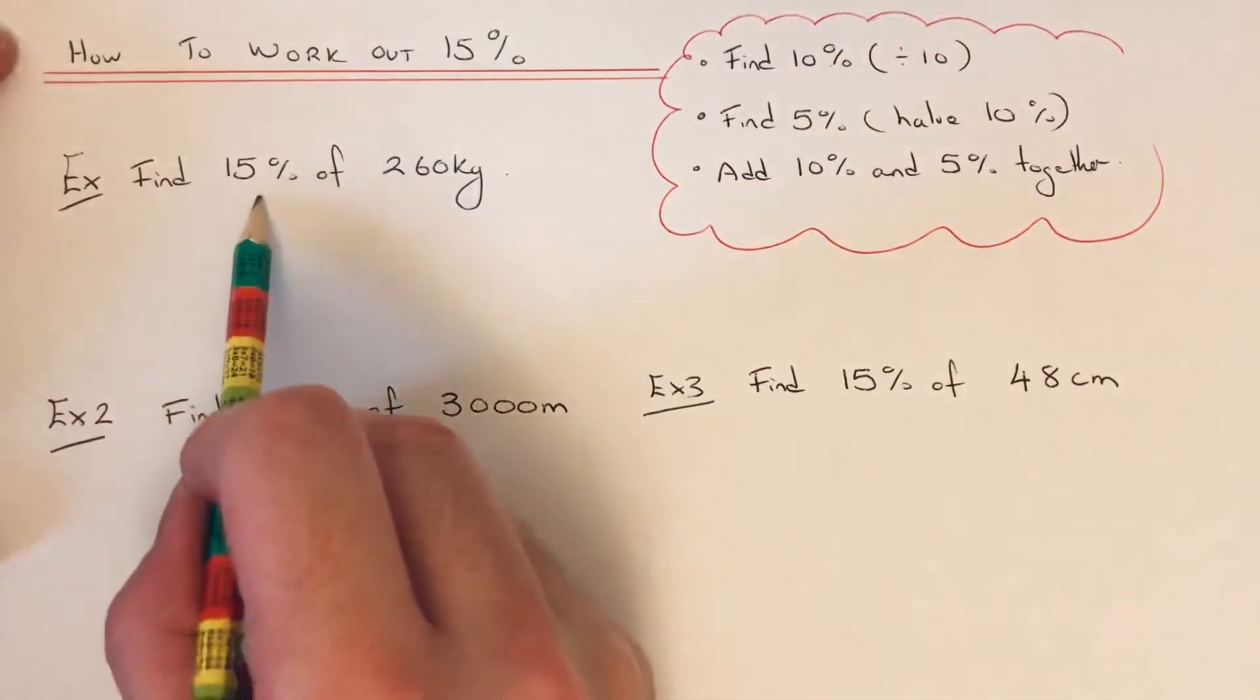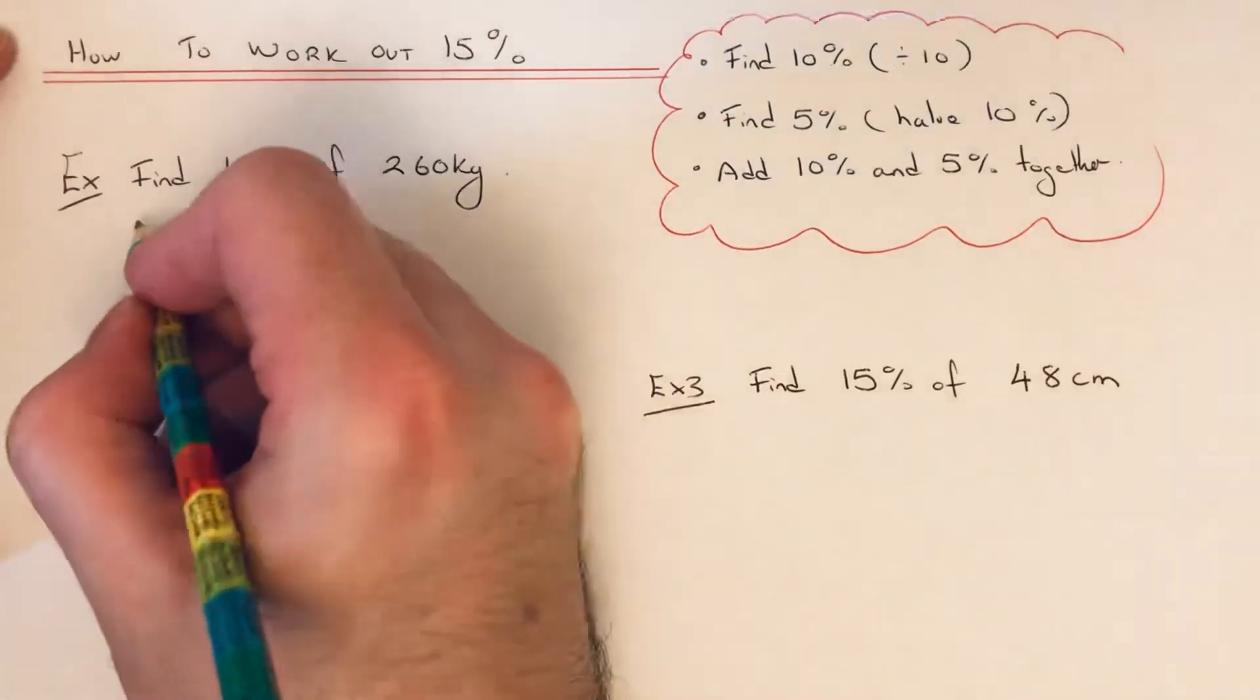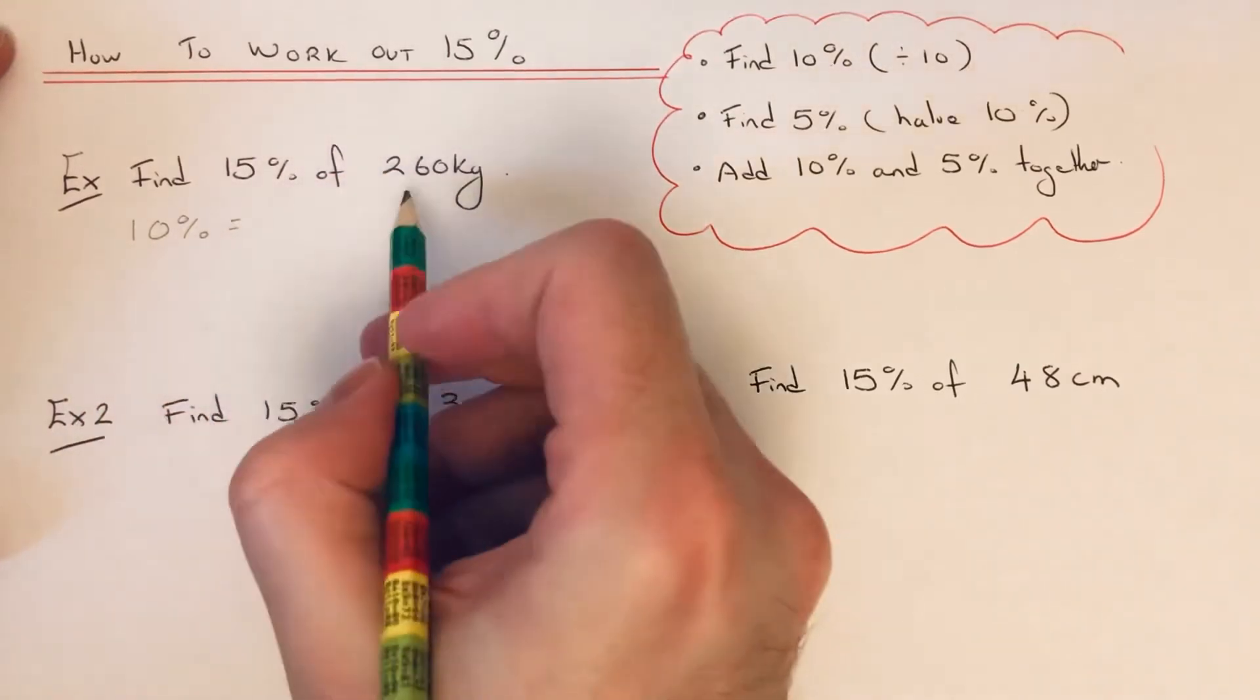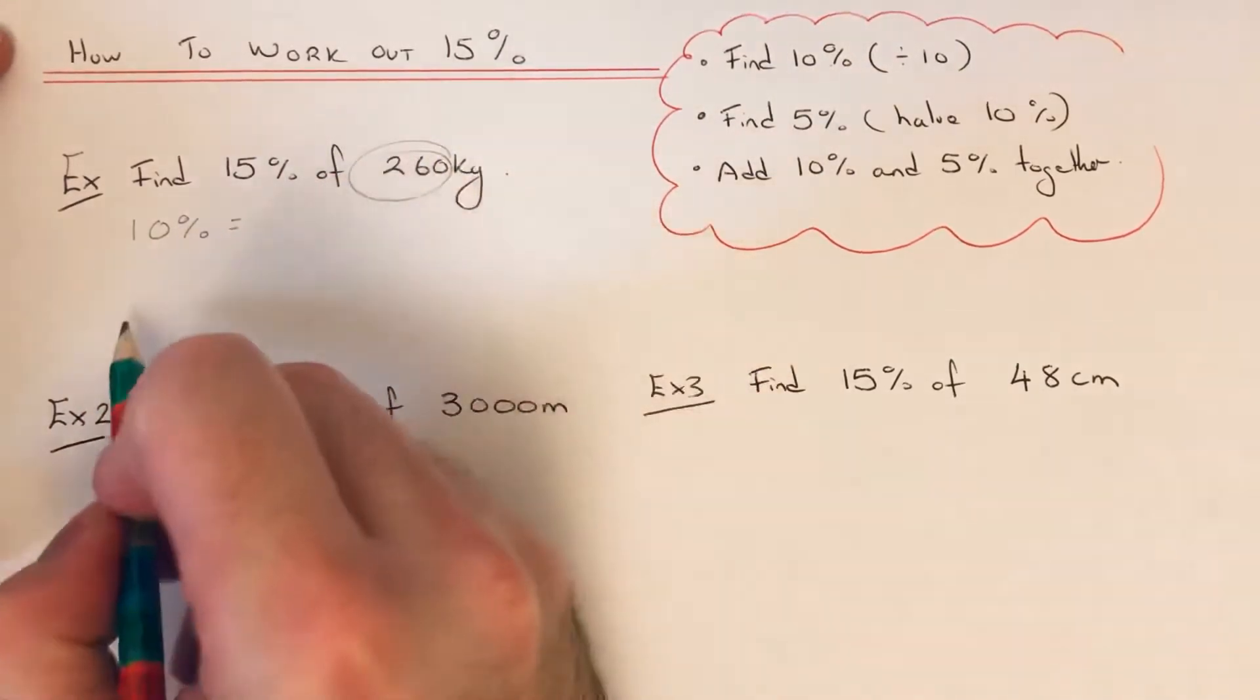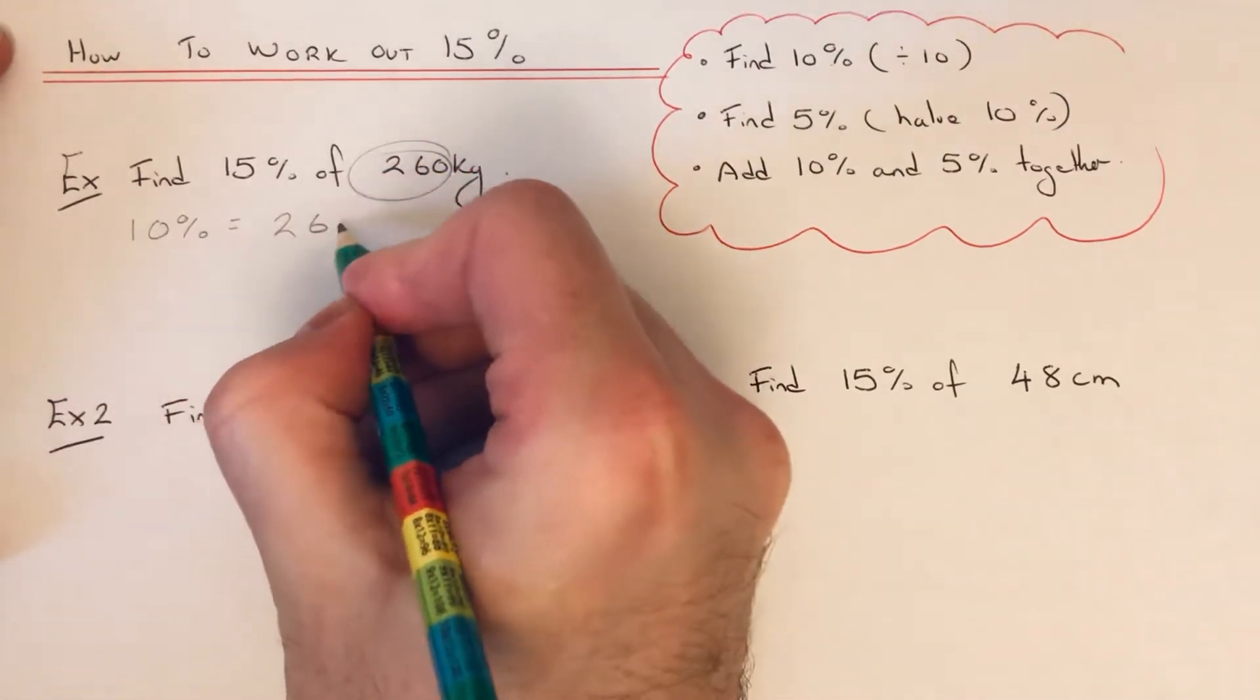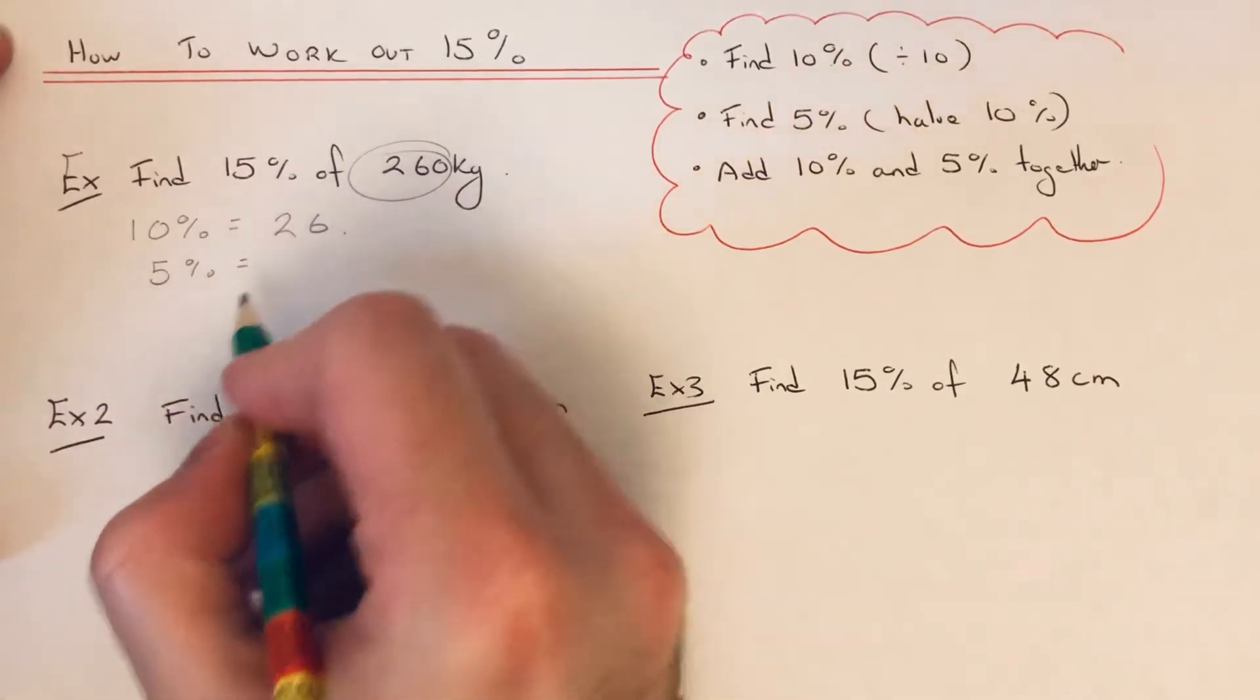the first example. We're going to work out 15% of 260 kilograms. Start by doing 10% first. To get 10%, we divide 260 by 10, which is 26. We then work out 5%, so